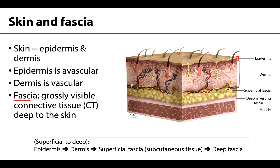Just deep to the dermis is a layer that has many different names. The preferred scientific name is superficial fascia, but you will commonly also hear this layer referred to as the hypodermis, subcutaneous tissue, or just the fatty layer, as it is composed of loose areolar connective tissue with varying amounts of adipose tissue. This makes it important for fat storage and as a principal site for large blood vessels supplying the skin. In the head and neck regions there is comparatively less adipose tissue than in other areas of the body.